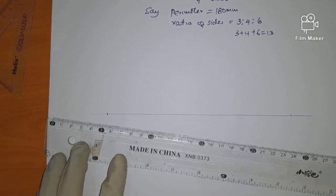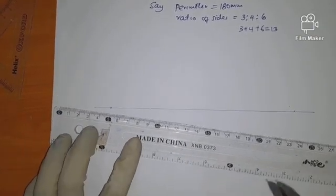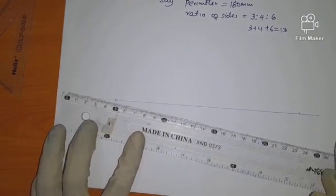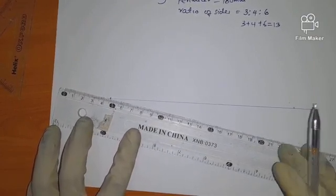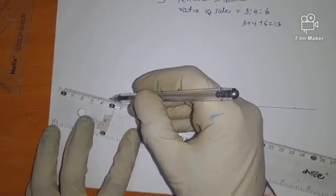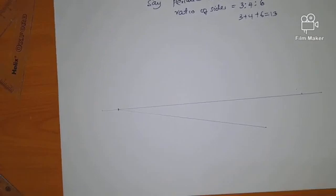To divide this line into 13 divisions, we can have a line from the starting point at any given angle, and then using your compass you'll have a number of divisions from the starting point equal to 13.